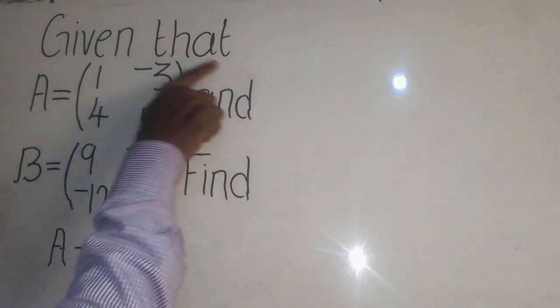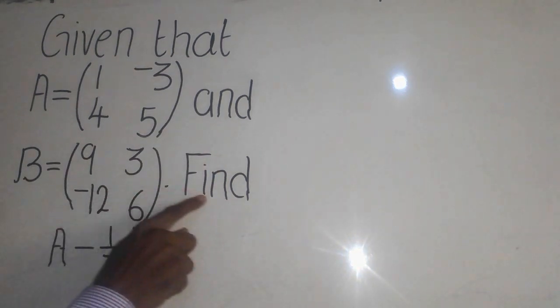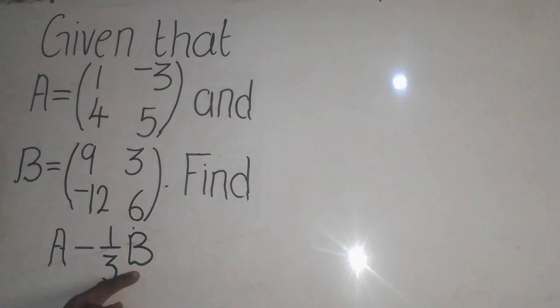This is a mathematics question that says: given that A is equal to this matrix and B is equal to this matrix, find A minus 1 over 3B.